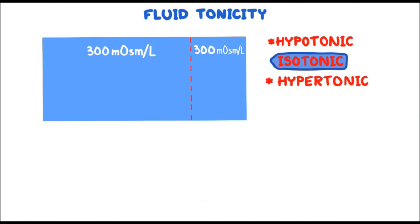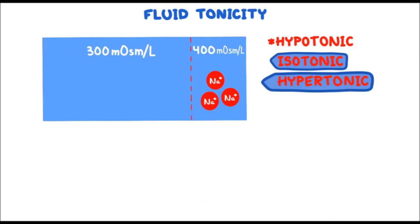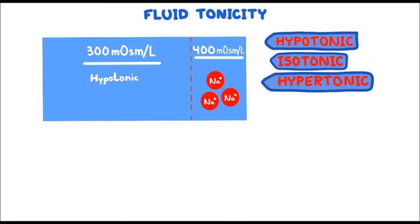If we add sodium to the extracellular fluid, the osmolarity of the extracellular fluid increases — suppose from 300 up to 400 milliosmoles per liter. The extracellular fluid is now called hypertonic; hyper means greater than. Now the two solutions separated by a semi-permeable membrane have different osmolarity: 400 for extracellular fluid and 300 for intracellular fluid. In comparison with the extracellular fluid, the intracellular fluid becomes hypotonic — hypo means less tonicity or osmolarity when compared to the now-hypertonic extracellular fluid.